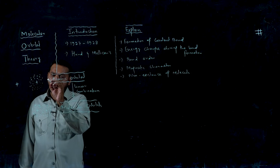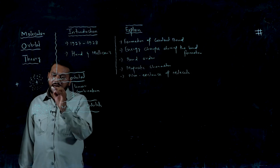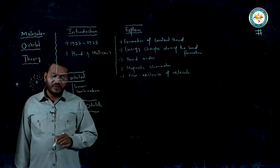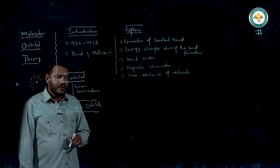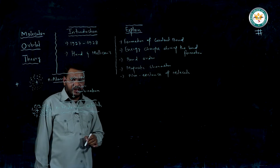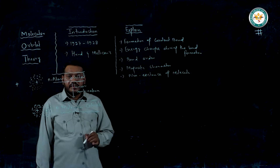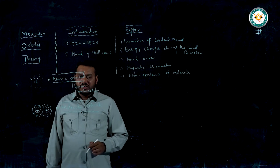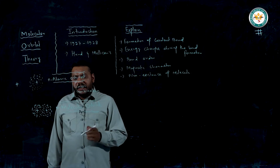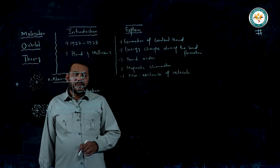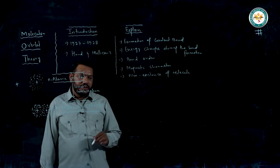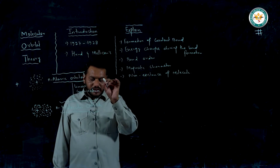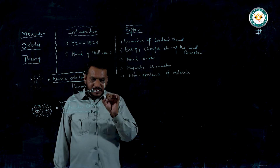We can see that n number of atomic orbitals form n number of molecular orbitals. The linear combination of n number of atomic orbitals gives n number of molecular orbitals.